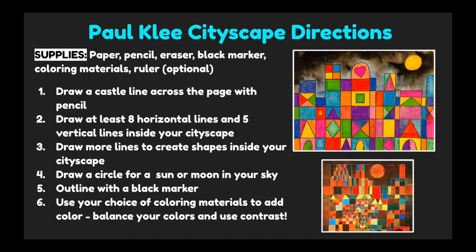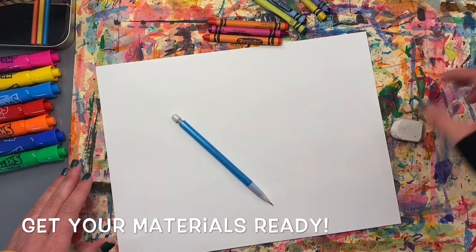So let's make a cityscape inspired by Paul Klee. Here's an overview of our directions. For your supplies today you will need paper, a pencil, an eraser, a black marker, coloring materials, and a ruler — the ruler is optional. First we'll start by drawing a castle line across the page in pencil. Then we'll draw at least eight horizontal lines and five vertical lines inside your cityscape shape. Then we'll draw more lines to create shapes inside your cityscape like triangles, diamonds, and smaller rectangles. Then we'll draw a circle for a sun or moon in your sky. After, we'll outline everything with a black marker and then use your choice of coloring materials to add color. We'll try to balance our colors by spacing them out and using contrast.